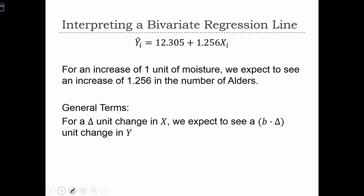Based on the regression line, it's important that we can interpret what the equation is telling us. Essentially, what the regression line tells us is that for a one unit increase in moisture, so if x goes up by one unit, we expect to see an increase of 1.256 alders in that area. So as moisture increases, alders increase at a rate of 1.256.